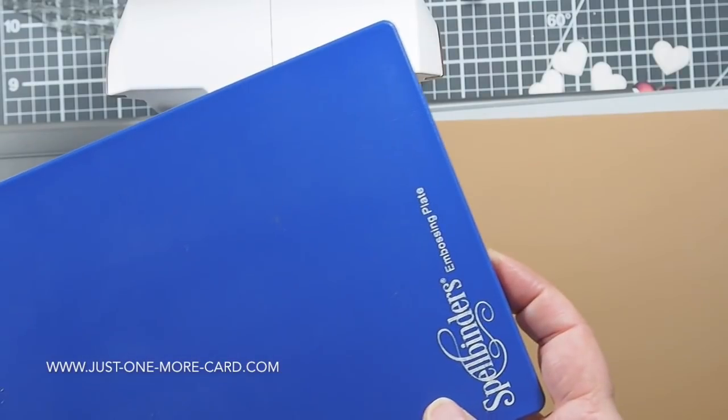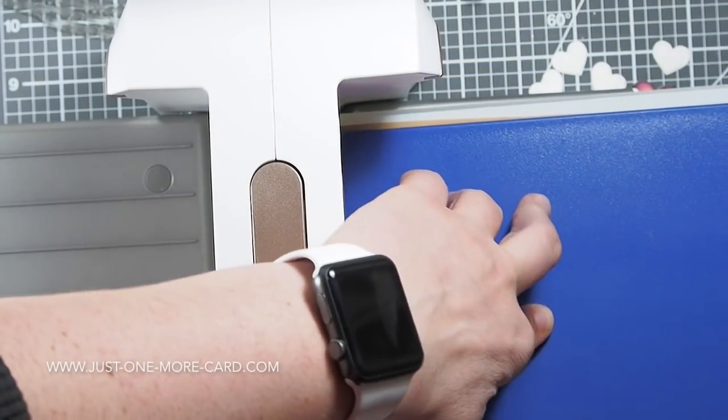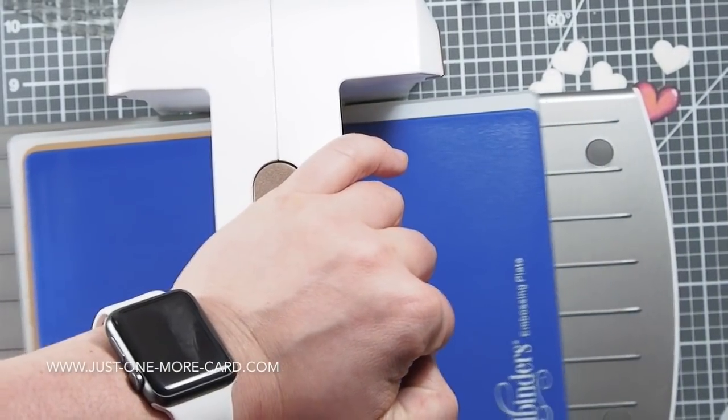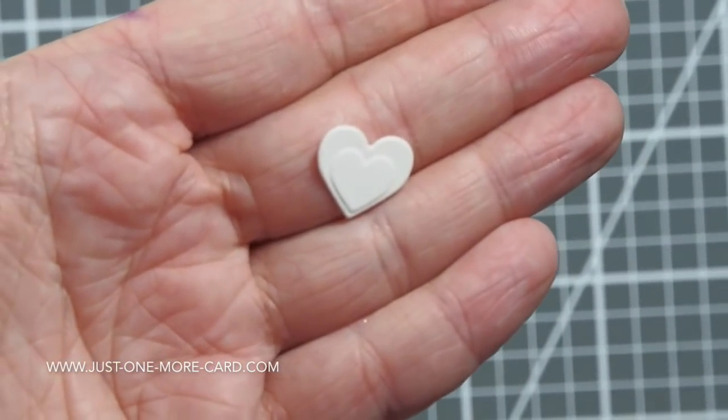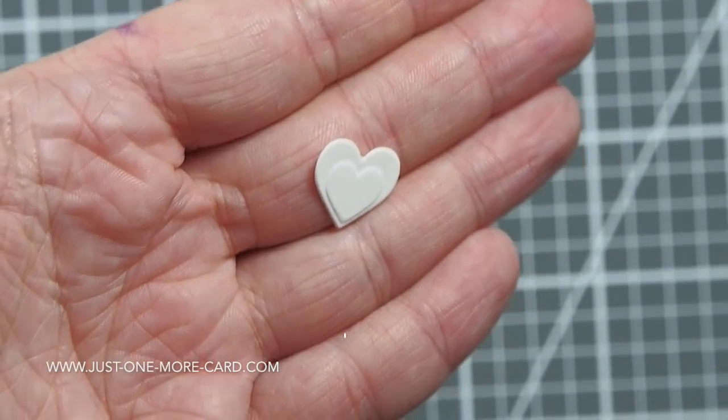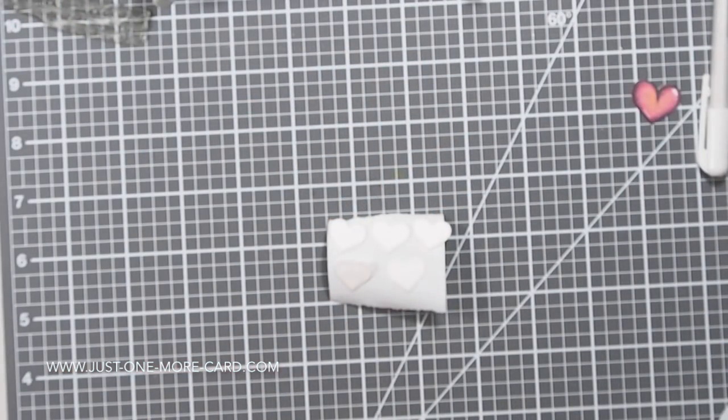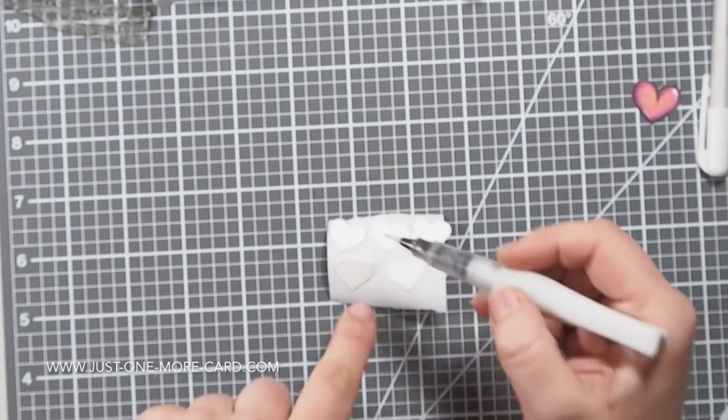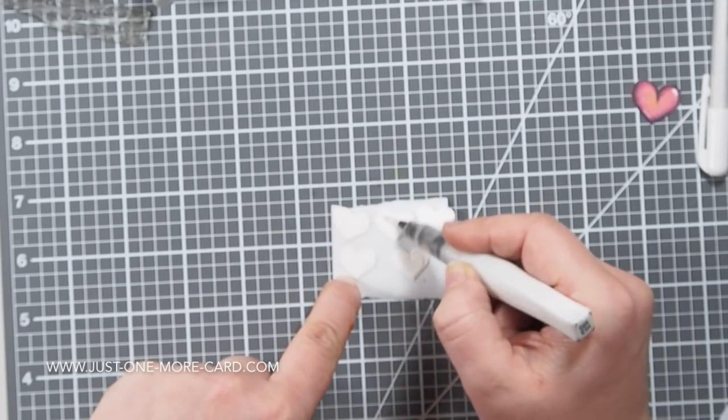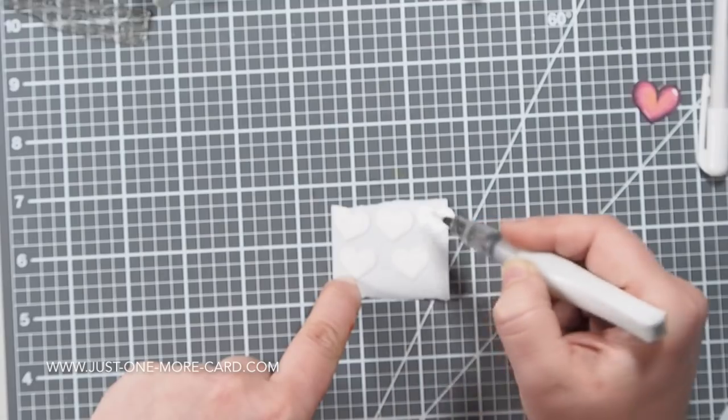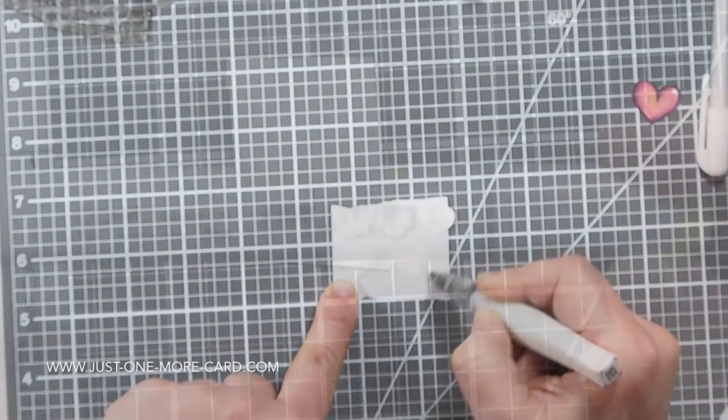I was absolutely surprised you get the machine—the Spellbinders machine, this is the Platinum 6 machine here that I'm using. You get your standard base platform, you get your cutting plates, and then you get the embossing mat and the embossing plate. It's all in one set that I absolutely love because for my Big Shot I had to buy all the embossing stuff in addition, so I was very pleasantly surprised.